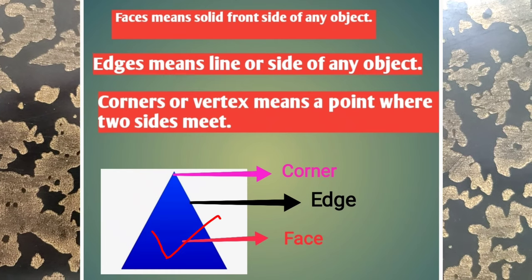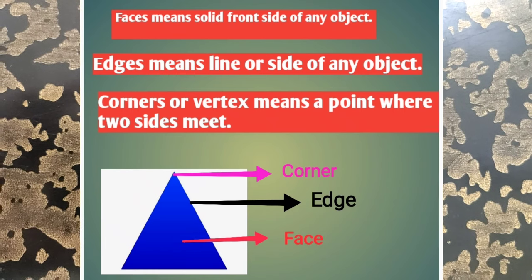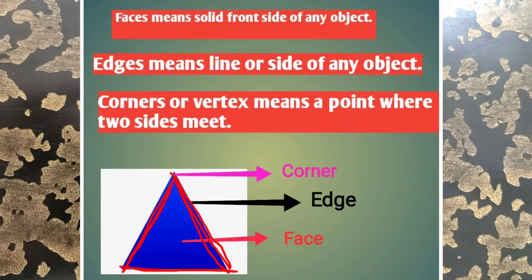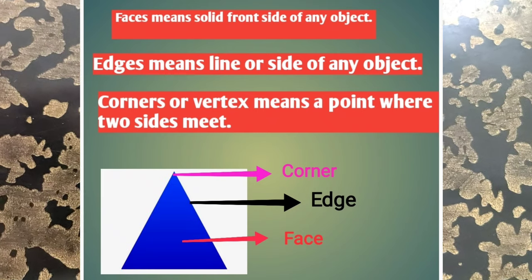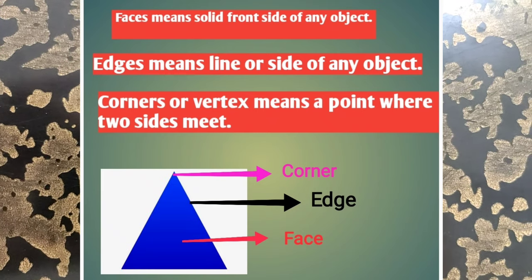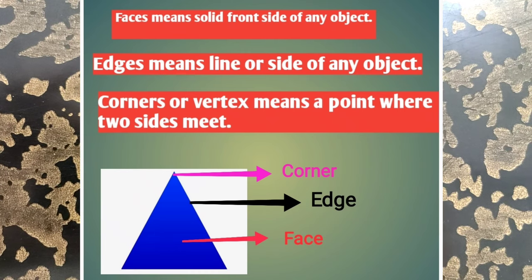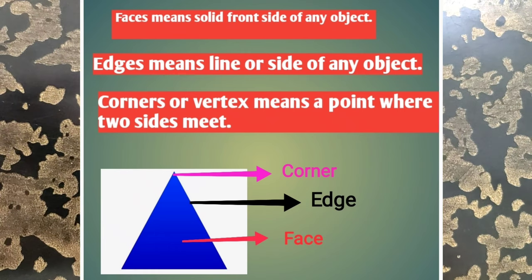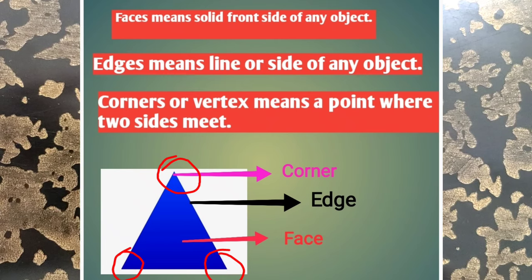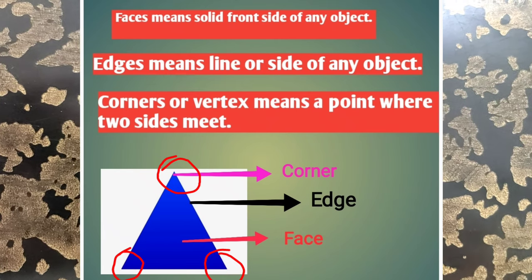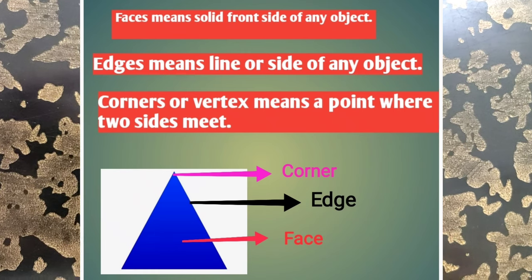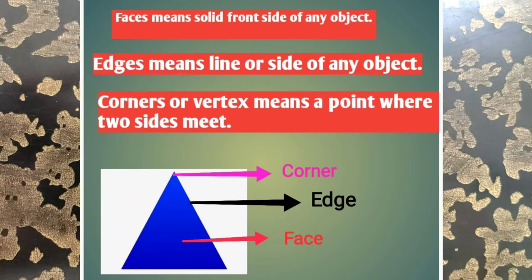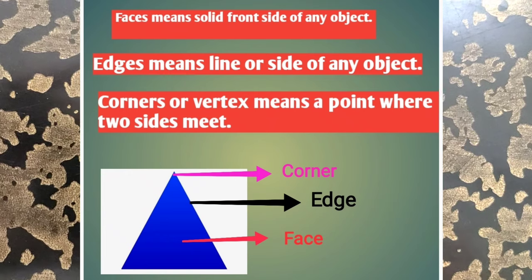The second term is edge. Edge means a line or side. A triangle is made with three straight lines, so those lines or sides are called edges. The third term is corner, also known as vertex. A corner is the point where two lines or two sides meet. When they join at a point, they form a corner. The plural form of vertex is vertices.